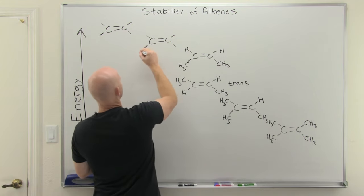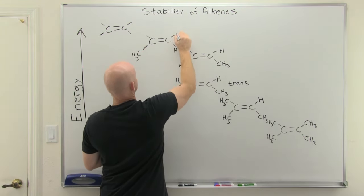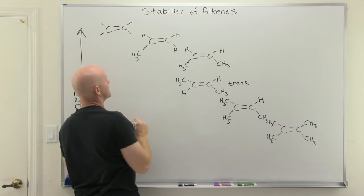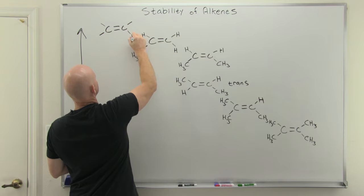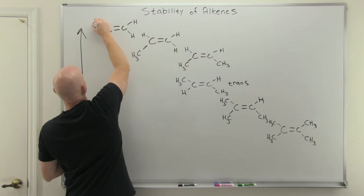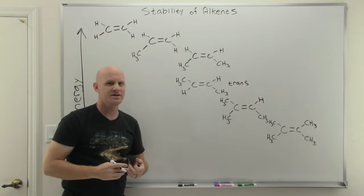Moving on from there, we'll then go to a mono-substituted alkene, where three out of the four positions are occupied by hydrogens and just one carbon chain. And then finally, we'll get a completely unsubstituted alkene. This would just simply be ethylene, and it is the highest energy here of our alkenes.